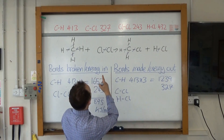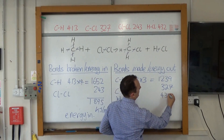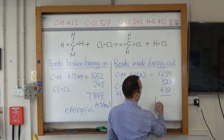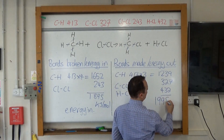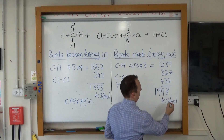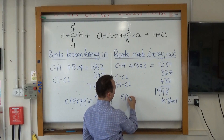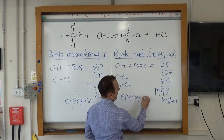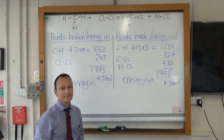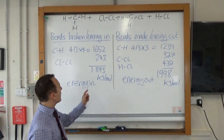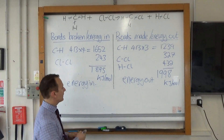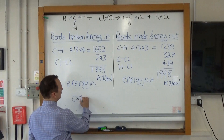The H–Cl bond is 432. We add all of those up and that comes to 1,998 kilojoules per mole, and that is the energy released — the energy out — from making those new bonds. In your exam you've already got a mark for working out energy in and a mark for working out energy out. The final mark is for working out the overall energy change.